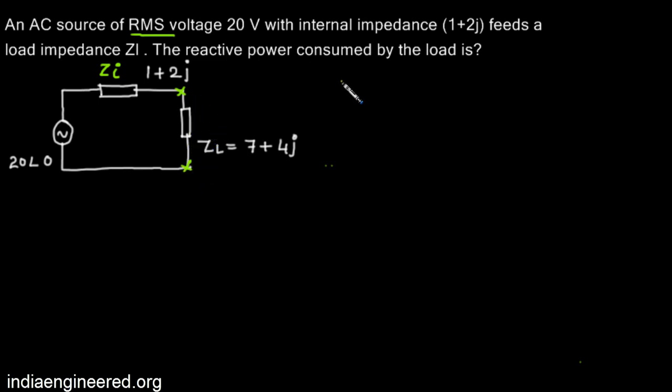Say the voltage across the load is V, and the RMS current through the load is I. Then I can find out the total power as V into I conjugate. This will give the total power which includes both reactive and active parts. Then we will separate what is the reactive power.